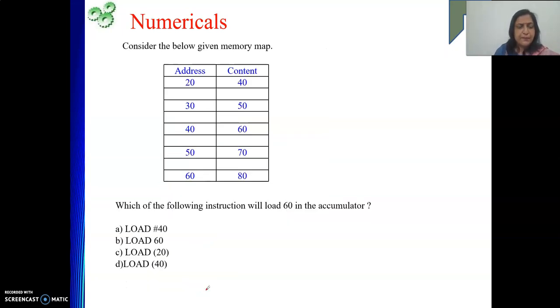This one is in fact very simple problem. What they have given? This memory map is given. What is memory map? Some addresses are given and the content of those memory locations are also given. They are asking us which of the following instruction will load 60 in the accumulator. Load means it will load the value 60 in the accumulator. Which instruction is the correct one? We need to see one by one. Load hash 40, hash 40 is immediate operand. That means 40 will be loaded into accumulator. No, we don't want. What do we want? 60 to be loaded. So it is not doing that.